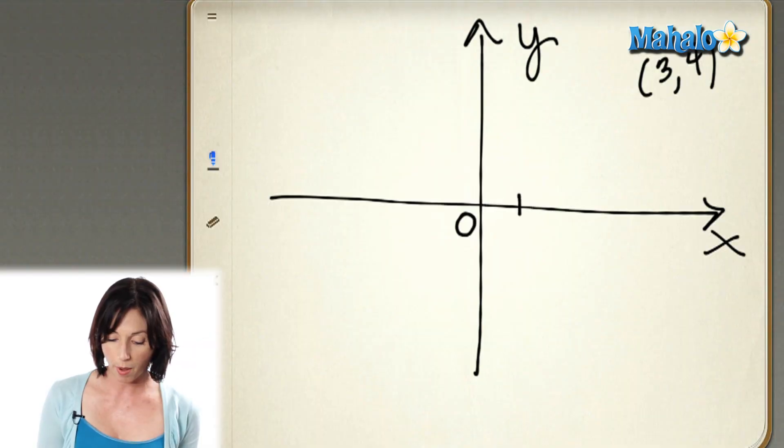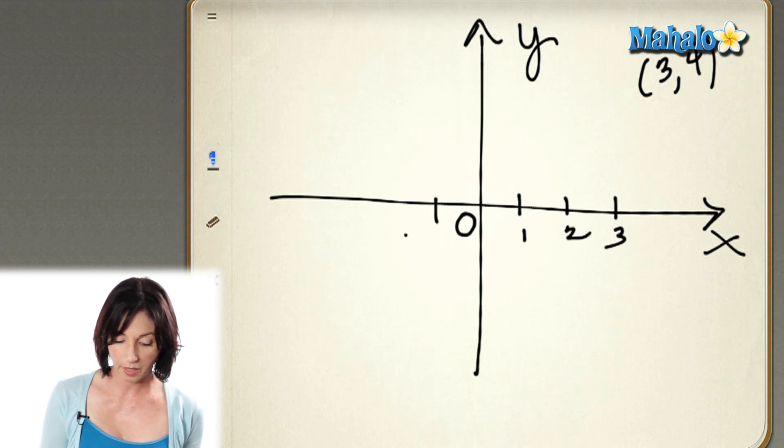When you move to the right in x, that's the positive direction. And when you move to the left, that's the negative direction in x. So we would have positive numbers over here, and we would have negative numbers over here.